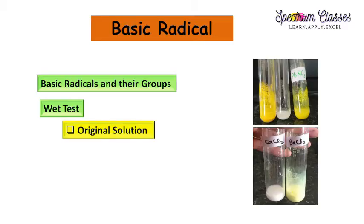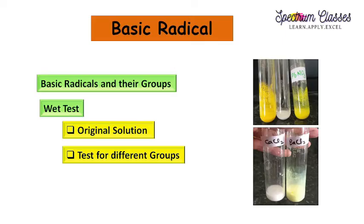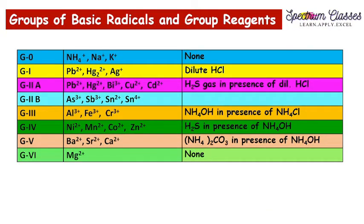To prepare the wet test for basic radicals we have to first prepare the original solution. In this video I'm showing you the lab activity for preparing the original solution. Secondly, we are going to discuss how to test the given mixture for presence of basic radicals of different groups. Here I am showing you the groups of different basic radicals and their group reagents.